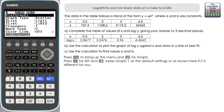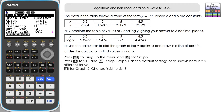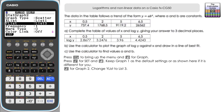Graph one has X variable as list one and Y variable as list two. I'm going to keep that as the graph of X against Y so we can compare the two graphs — it'll also be used for part C. For graph two, we need to change the Y variable to log Y, which is list three, so we change it to list three. That will plot X against log Y.